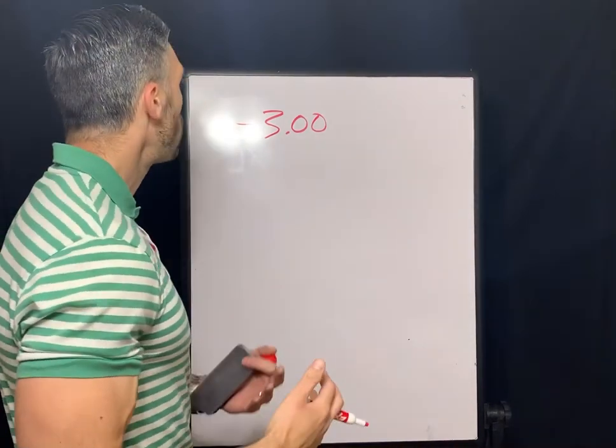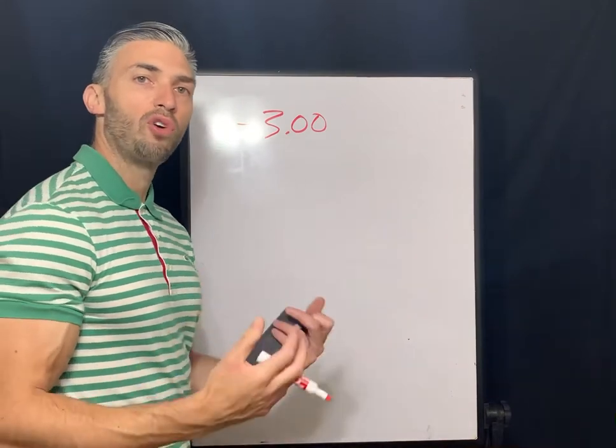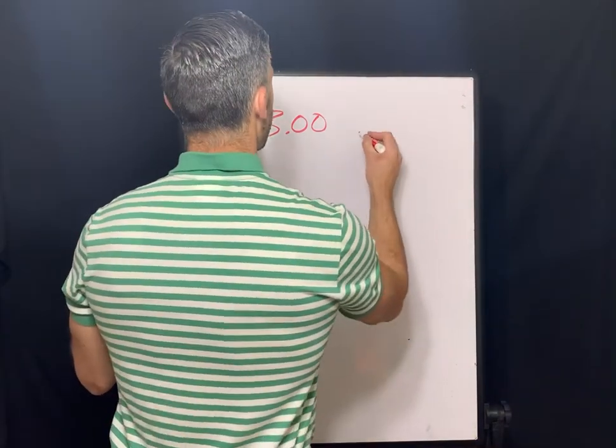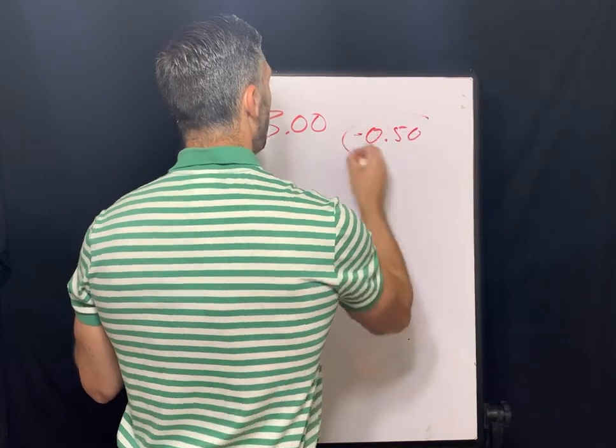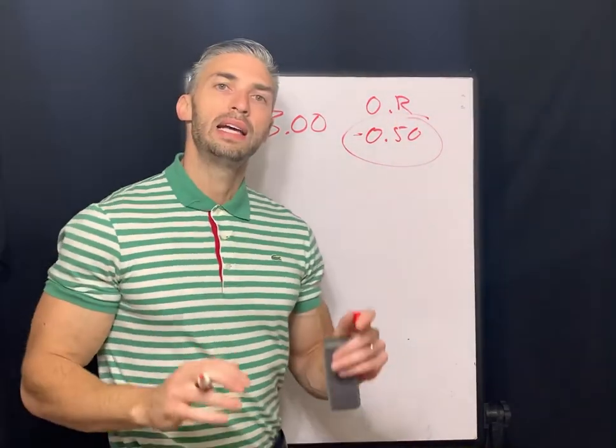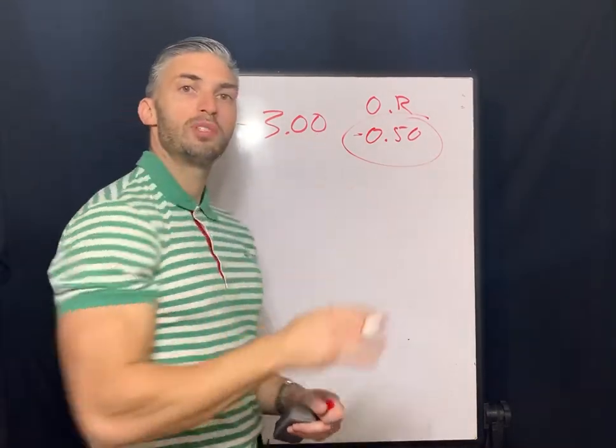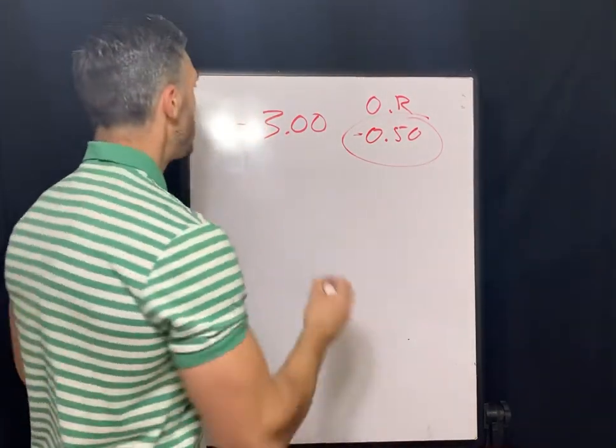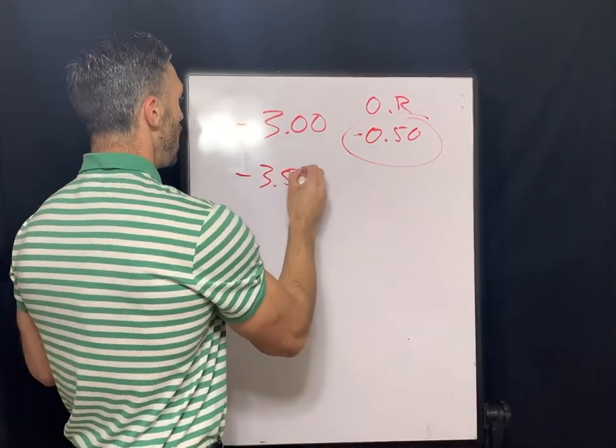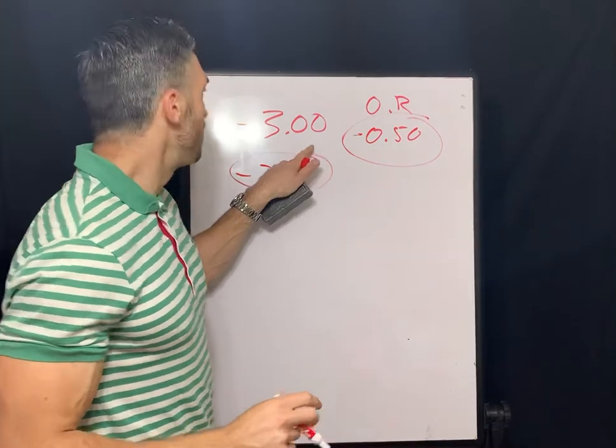So if when you over-refract them on the phoropter, you click in and you see that they're seeing better with a negative a half over-refraction. All you have to do is add your over-refraction to your current prescription to get your new prescription. So you would actually prescribe a minus 3.50 keeping the same parameters that you had for this original lens.